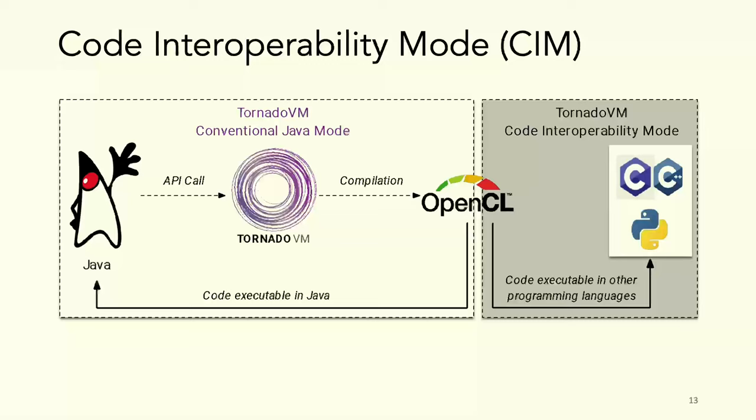With the conventional Java mode on the left, OpenCL is executable only through the JVM and TornadoVM. But with the code interoperability mode on the right, this kernel can be used by other programming languages like Python, C++, and others. This shows we can use Java for prototyping parallel heterogeneous code.